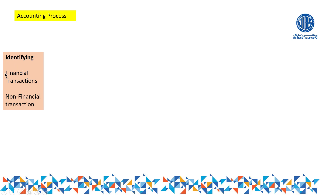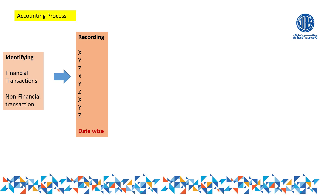Suppose we have identified 100 transactions which are financial character transactions. After step one — identifying — we move to the next step, which is recording. When you determine that transactions are financial and can be recorded in the book of account, you start recording. Recording is done date-wise.